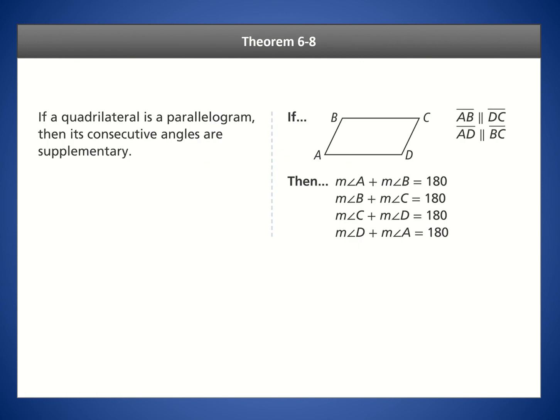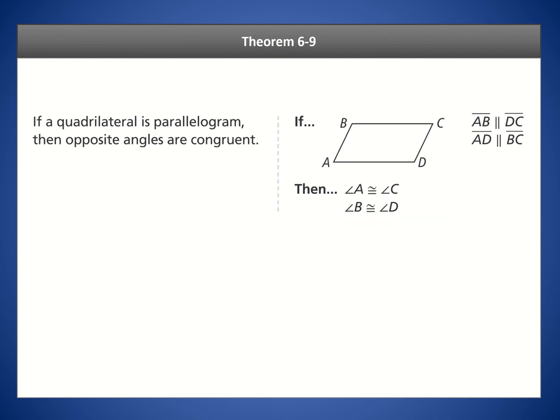These are the theorems we're discussing here. Theorem 6-8: if a quadrilateral is a parallelogram, then its consecutive angles are supplementary — so angles B and A add up to 180, as do A and D, D and C, and so on. Theorem 6-9: opposite angles of a parallelogram are congruent — so angle B is congruent to angle D, for instance.